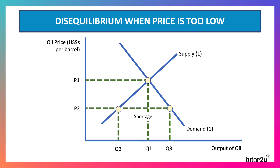Conversely, if the price was low — P2 down there — demand would expand, supply would contract, and you'd end up with a situation of excess demand, another situation of disequilibrium.